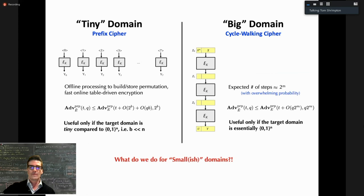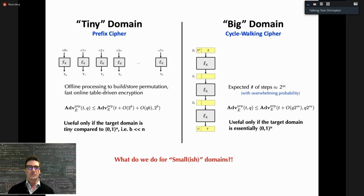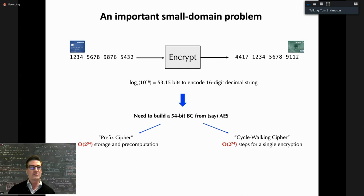To recap: the prefix cipher handles the tiny domain case with a very tight reduction, but requires precomputation of the whole domain — e.g., 2^40 cipher calls for a 40-bit cipher — so it only works when the domain is very small. The cycle walking cipher covers the big domain case — domain close to n. The question is: what do we do for the small domain in between?